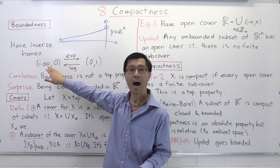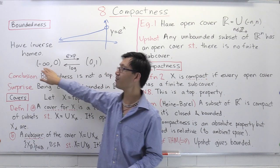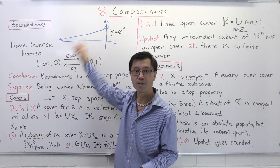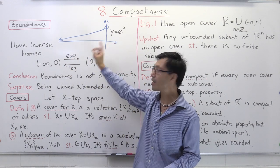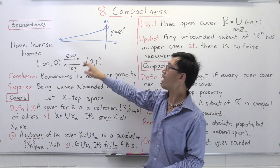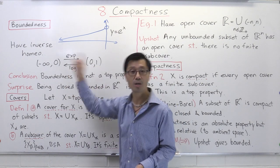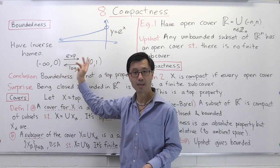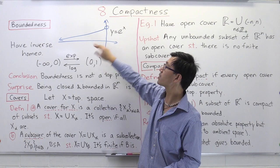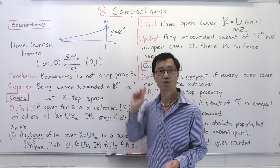Here we're going to look at the following unbounded set inside R: the set of real negative numbers, the open interval from minus infinity to zero. We're going to look at the exponential function — I've drawn the graph for the negative reals here. The image of that is just the open interval from zero to one. This is a continuous map, and its inverse is given by log, which is also continuous. So you have a bi-continuous map giving inverse homeomorphisms from this unbounded set of negative reals to this bounded set. We see straight away that the notion of boundedness is not a topological property.